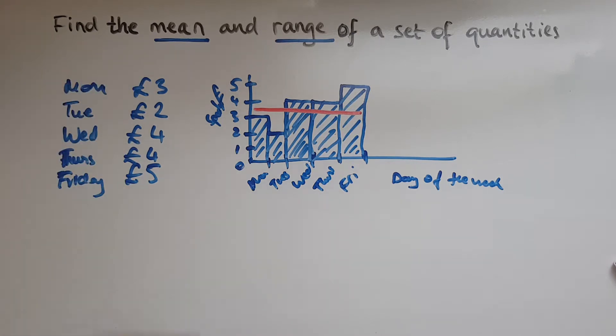And we need to take into account all of them, all of the amounts. And if I find the total and then share them equally or divide by how many days there are, that's going to give me how much on average I've spent each day. So taking into account the highest and lowest as well, and every amount.